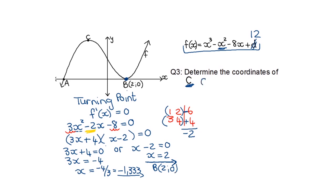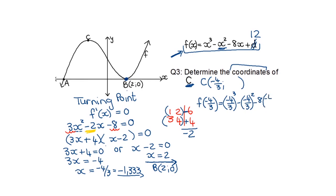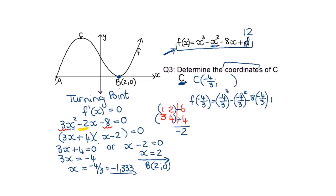They asked for coordinates, so I need the y-value. I substitute x equals negative 4/3 into the original equation. Using a calculator, the result is approximately 18.519. So the coordinates of C are approximately (negative 1.333, 18.519).